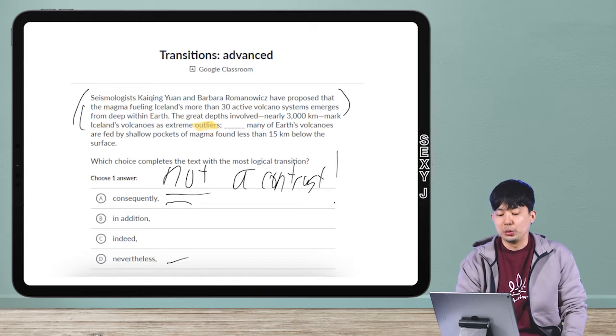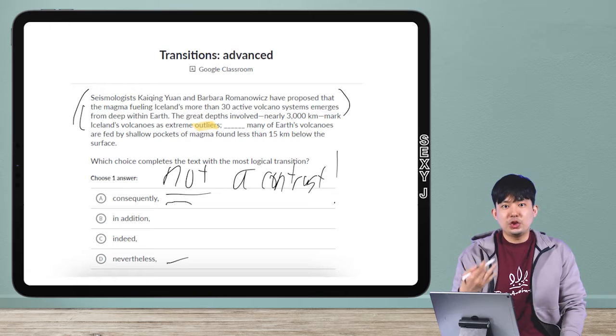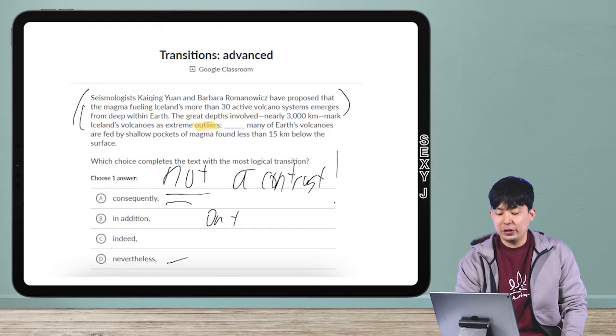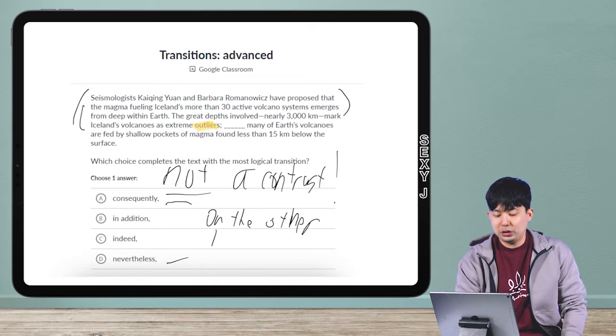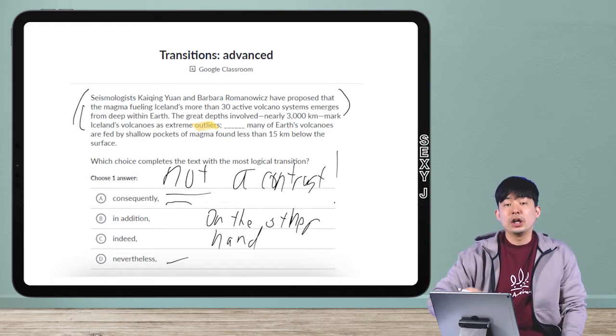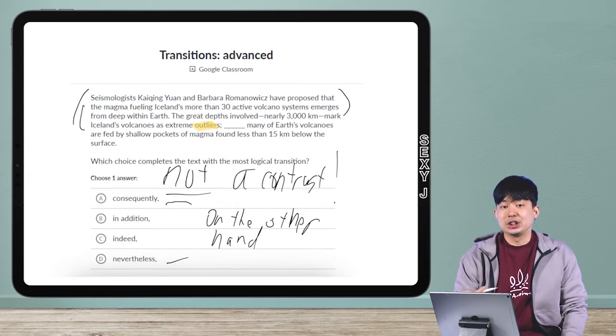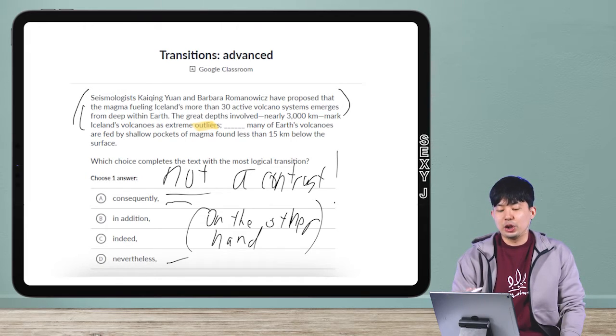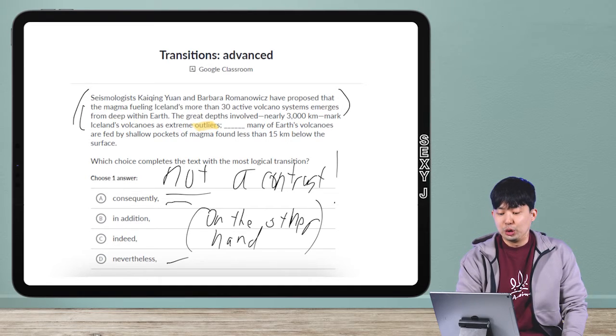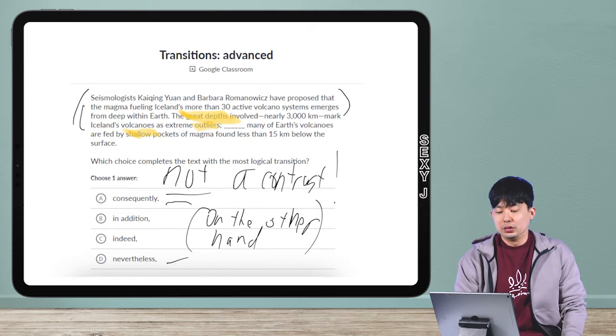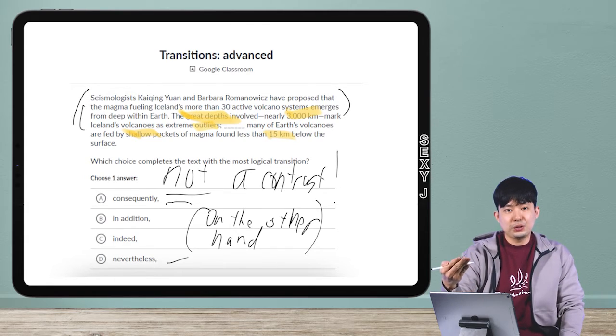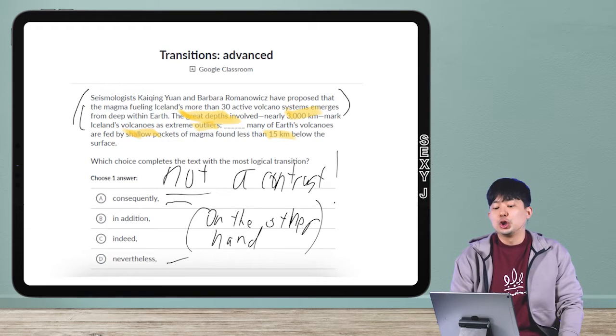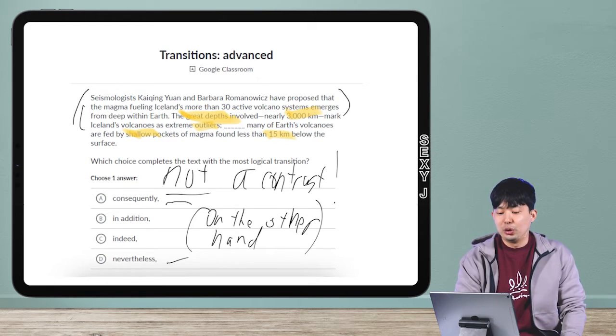A lot of people are going to go like, oh, this is like on the other hand. I'm going to use a strategy that Jay taught me. I'm going to paraphrase, put my own transition in there, and then therefore on the other hand, nevertheless. But I have to be careful. They go like great depths and then shallow, or they go 3,000 and 15. Jay, clearly this is a contrast - great depths versus shallow, 3,000 versus 15. That's on the other hand. Sure, they would be, except we're ignoring the word outlier.